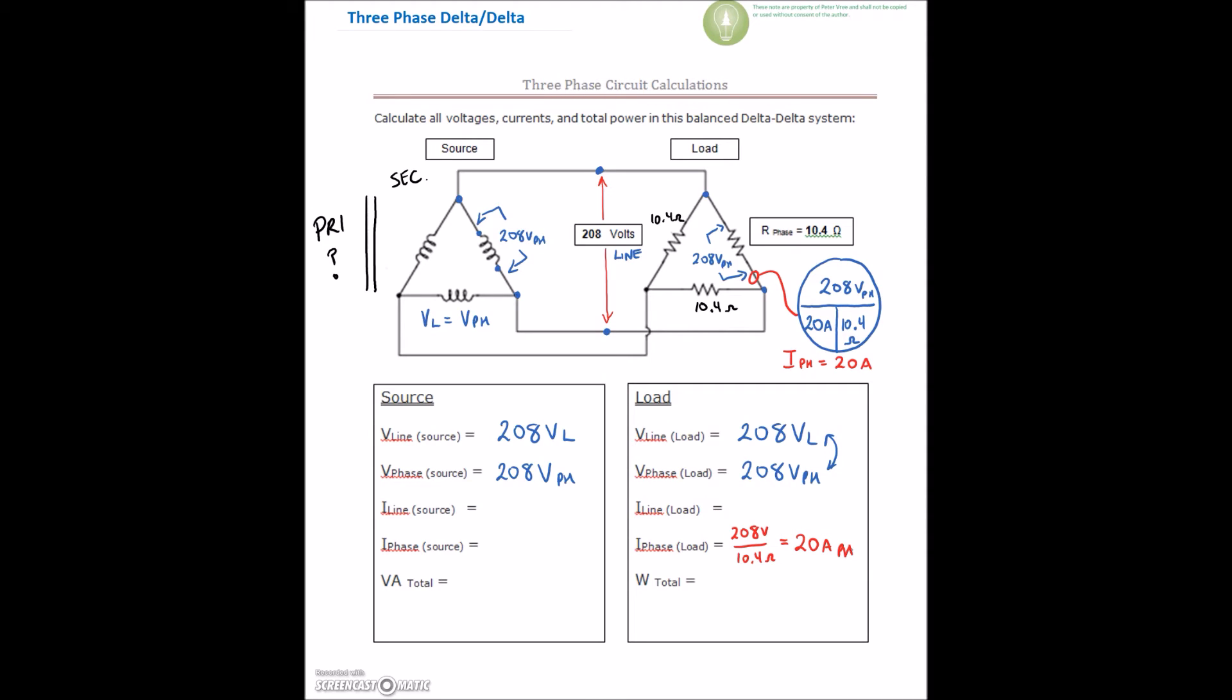The current on the line is always greater than the phase current on a delta circuit. We know that our line current is equal to our phase current times root 3. So, in order to find our line current here, and our line current would be right here on the outside of the circuit,